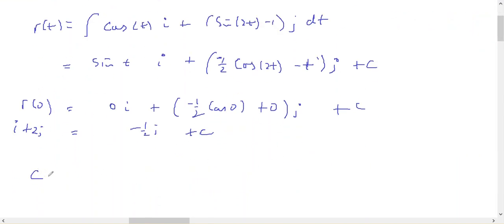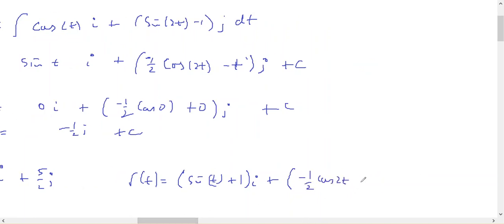Therefore, c is going to equal i + 5/2 j. So, that gives me r(t) equals sin(t) + 1 in the i, plus -1/2 cos(2t) minus t plus 5/2 in the j. That's all.